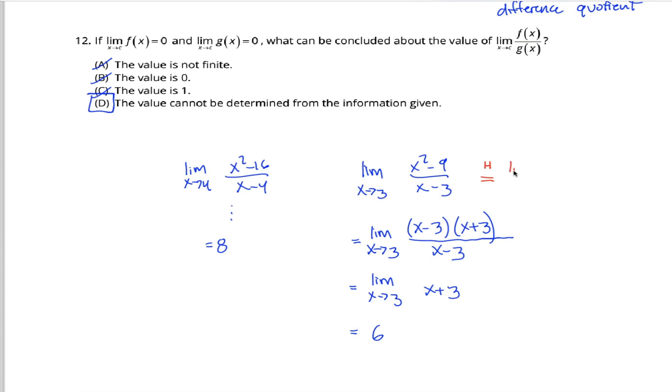instead of evaluating this limit, we can evaluate the limit of the quotient of the derivatives. In other words, if you can take the derivative of the top here, the derivative of x squared minus 9 is 2x, and you can take the derivative of the bottom here, the derivative of x minus 3 is just 1,